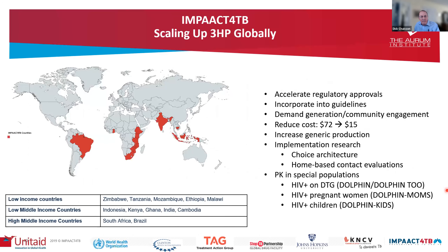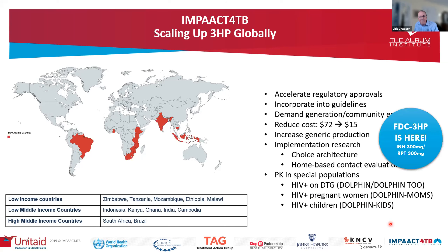In terms of making these therapies available: working with a large group funded by Unitaid to scale up rifapentine-based prevention for TB in people with HIV and in child household contacts, we've been able to reduce the cost of rifapentine from $72 to $15 and achieve generic competition. This program has sponsored the DOLPHIN studies and will soon begin a DOLPHIN mom study looking at pregnant women and a DOLPHIN kids study looking at children and co-administration of rifapentine-based treatments and dolutegravir.